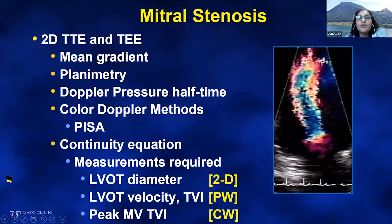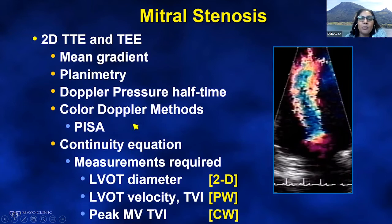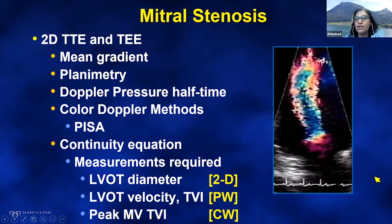The different measurements we get on echocardiography include mean gradient, planimetry of the valve, pressure half-time (which allows us to calculate mitral valve area), color Doppler methods including PISA, and continuity equation methods. We'll talk about when to use these and what the pitfalls might be. This still frame shows the obstruction across the mitral valve of flow into the LV.